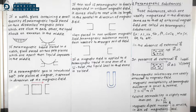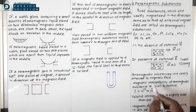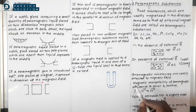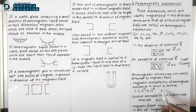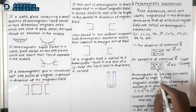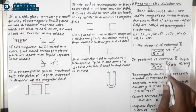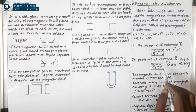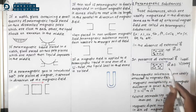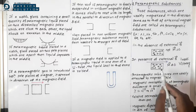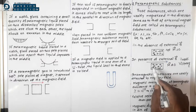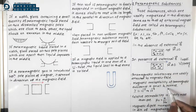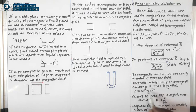Paramagnetic substances are weakly attracted by the magnetic field and are weakly magnetized in the same direction as the external magnetic field — this is positive. In contrast, diamagnetic substances align in the opposite direction, which is negative. The magnetic susceptibility of paramagnetic substances is small and positive, of the order of 10⁻³ to 10⁻⁵.